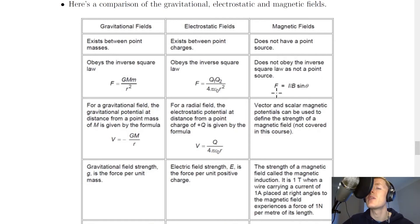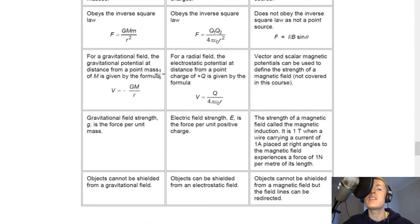However we can calculate the force exerted on a current carrying wire in a magnetic field using F equals ILB sine theta. Next it says that for a gravitational field the gravitational potential at distance from a point mass of M is given by the formula V equals minus GM over R. So we've got gravitational potential.